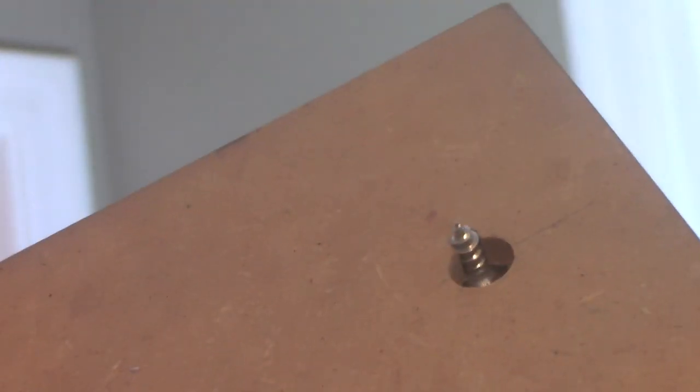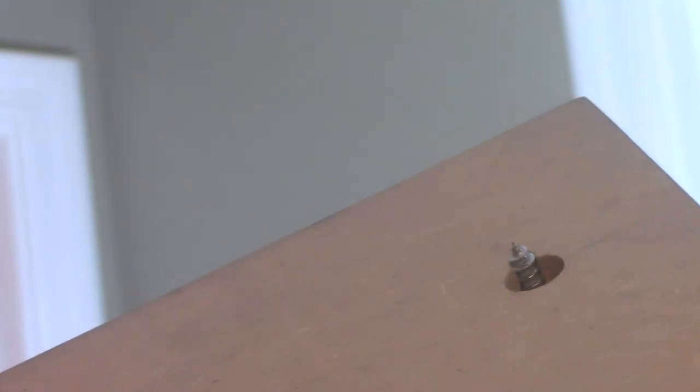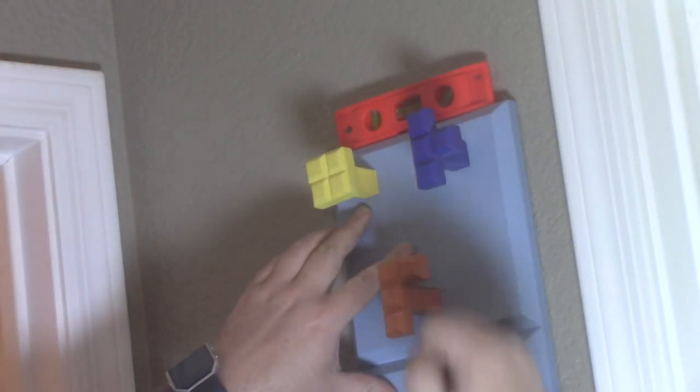I went ahead and made a cardboard template to get the holes transferred but realized it wasn't going to work. So I just stuck some half inch screws in the holes and pressed it against the wall to make marks. Then went ahead and drilled them and put in wall anchors.